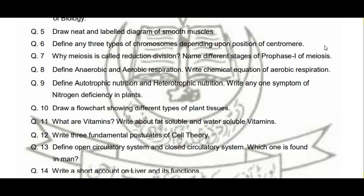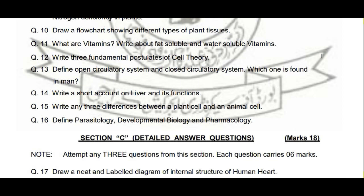Next: 'Write three fundamental postulates of cell theory.' Cell theory mein waise toh four postulates book mein given hain, aapko teen likhne hain. Yeh zyada better hoga ke un fundamental postulates ki headings banakar dikhain. Then: 'Define open circulatory system and closed circulatory system. Which one is found in man?' Dono circulatory systems ki definition dikhani hai aur batana hai ke humans mein kaunsi type payi jati hai.